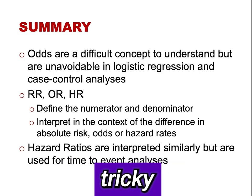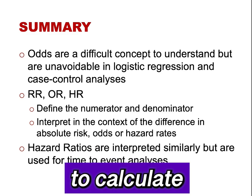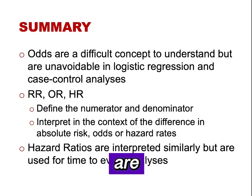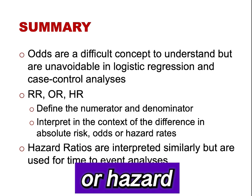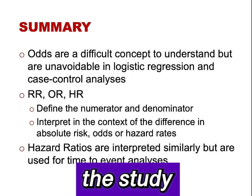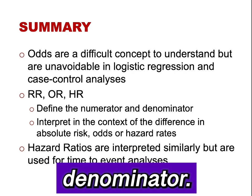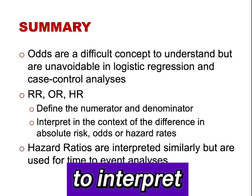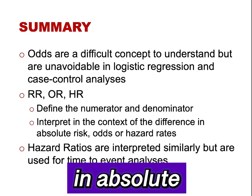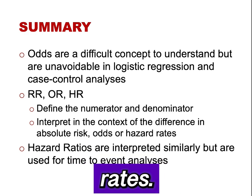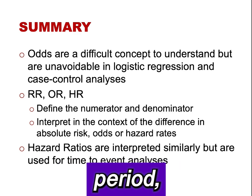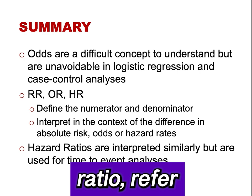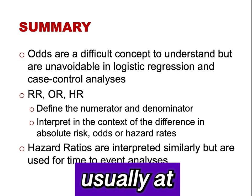In summary, odds are a tricky concept to understand. I strongly prefer using the absolute risk in each group to calculate a relative risk. However, odds ratios are unavoidable in logistic regression and case-control studies. When interpreting a relative risk, odds ratio, or hazard ratio, it is important to understand which study group is in the numerator and which is in the denominator. It is also essential to interpret these measures in the context of the difference in absolute risks, odds, or hazard rates. Hazard ratios are used in time-to-event analyses and interpreted similarly to relative risk and odds ratio, but they apply to event rates over the study period, while relative risk and odds ratio refer to event rates at a specific point in time, usually at the end of the study.